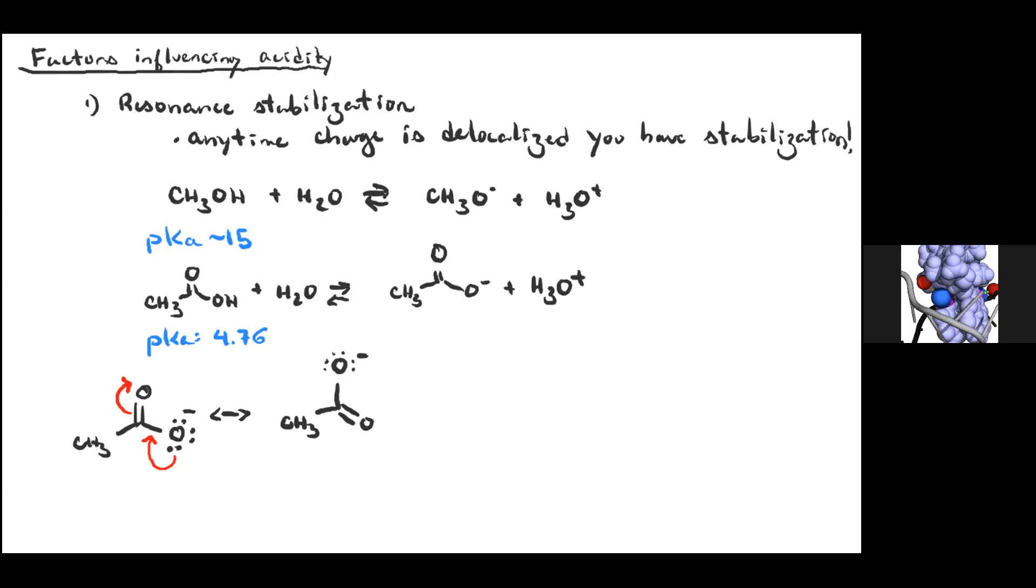But what it tells me is that that negative charge is spread out among the two oxygens. And another way to sort of emphasize that would be to draw it sort of like this. So the negative charge in the acetate ion is spread out. And in particular, it's spread out among two very electronegative oxygen atoms.